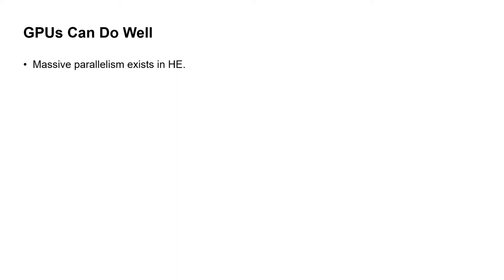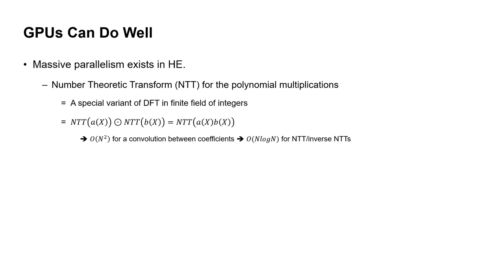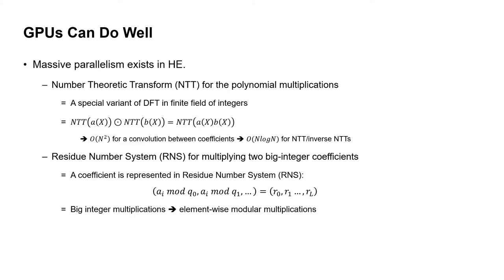In this case, hardware accelerators can do their job. First, there are massive parallelisms in HE. HE uses number theoretic transformation, called NTT, in their polynomial multiplications. It is an integer version of discrete Fourier transformation, and as in DFT, it converts the O(n²) complexity of polynomial multiplication into O(n log n) complexity. The second thing is the residue number system. It uses the ancient Chinese remainder theorem, representing a big number into a set of residues R0 to RL by applying modular operations with a given prime set Q0 to QL, transforming multiplication between two big integers into element-wise modular multiplication. These two algorithms give large parallelism to HE, and CPUs can enjoy it.